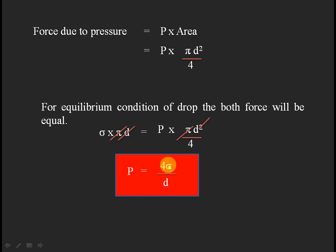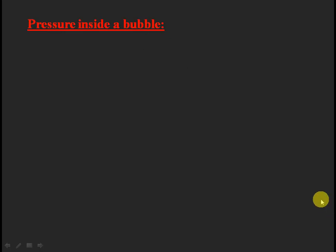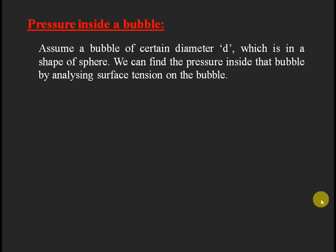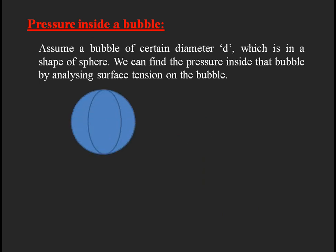This pressure can be determined by knowing the surface tension, which is constant for a particular fluid, and the diameter of the drop. Similarly, for a bubble — which is also spherical — the bubble is in contact with air on two surfaces, inside and outside, so the surface tension acts twice and is compensated by the pressure.